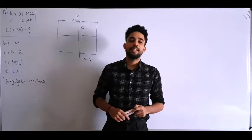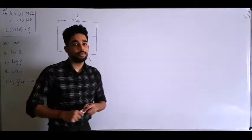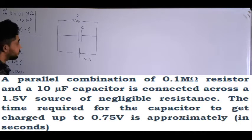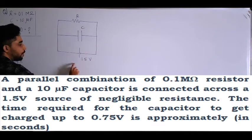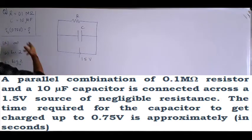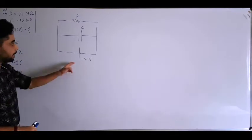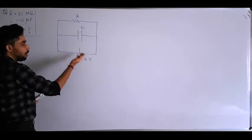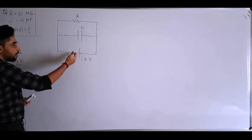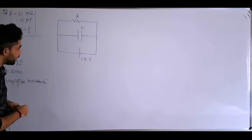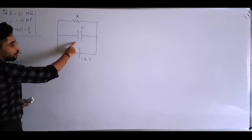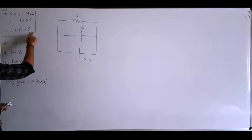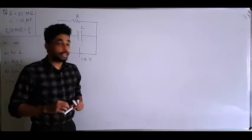Welcome to Detangle. In this video we have an interesting question: a capacitor and a resistor are connected in parallel across a 1.5 volt cell. Given the values of resistance and capacitance, and with negligible resistance in the circuit — no internal resistance of the cell or wire resistance — you have to find the time taken for the capacitor to charge up to 0.75 volt.